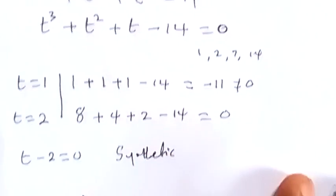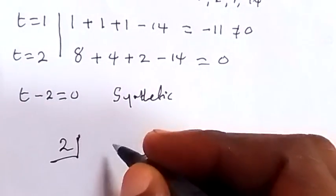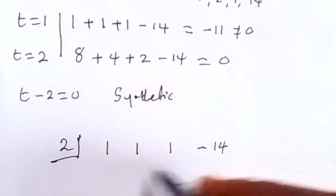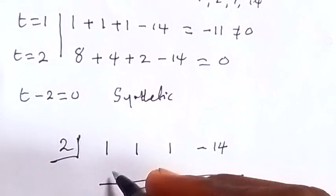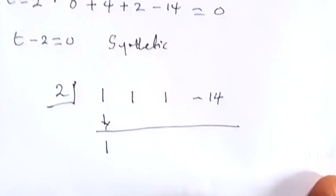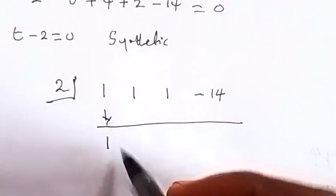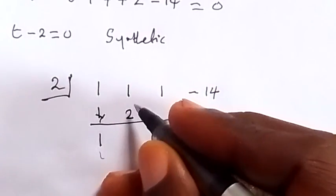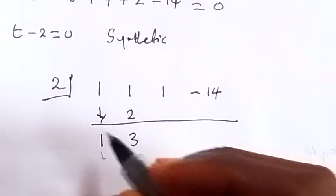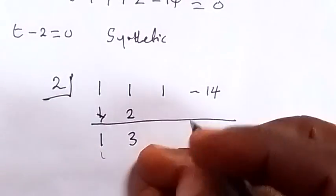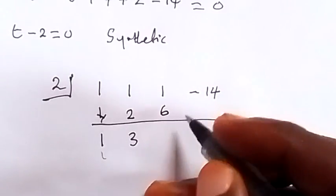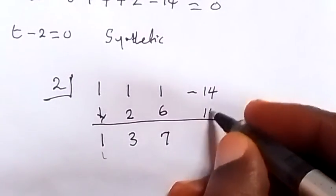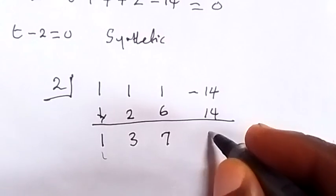For synthetic division, the coefficients of the polynomial are 1, 1, 1, minus 14. We drop the first coefficient, which is 1. Then 2 times 1 is 2 — we write it here and add: 1 plus 2 is 3. Then 2 times 3 is 6 — add: 1 plus 6 is 7. Then 2 times 7 is 14 — add: minus 14 plus 14 gives us 0, confirming that 2 is a root.